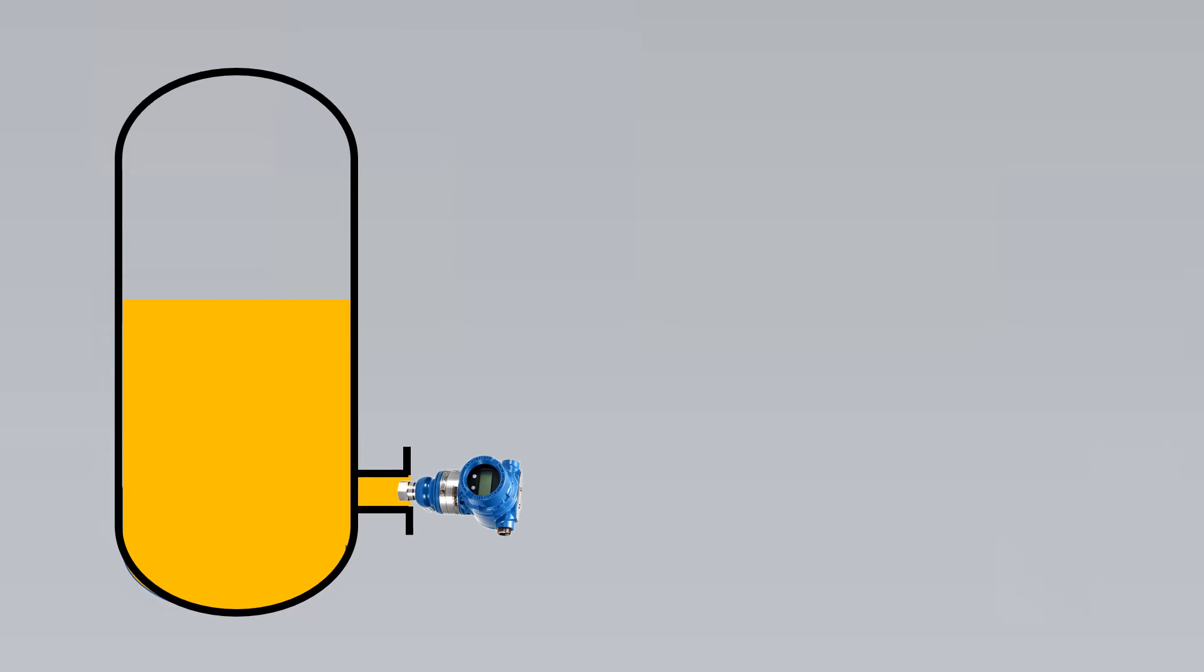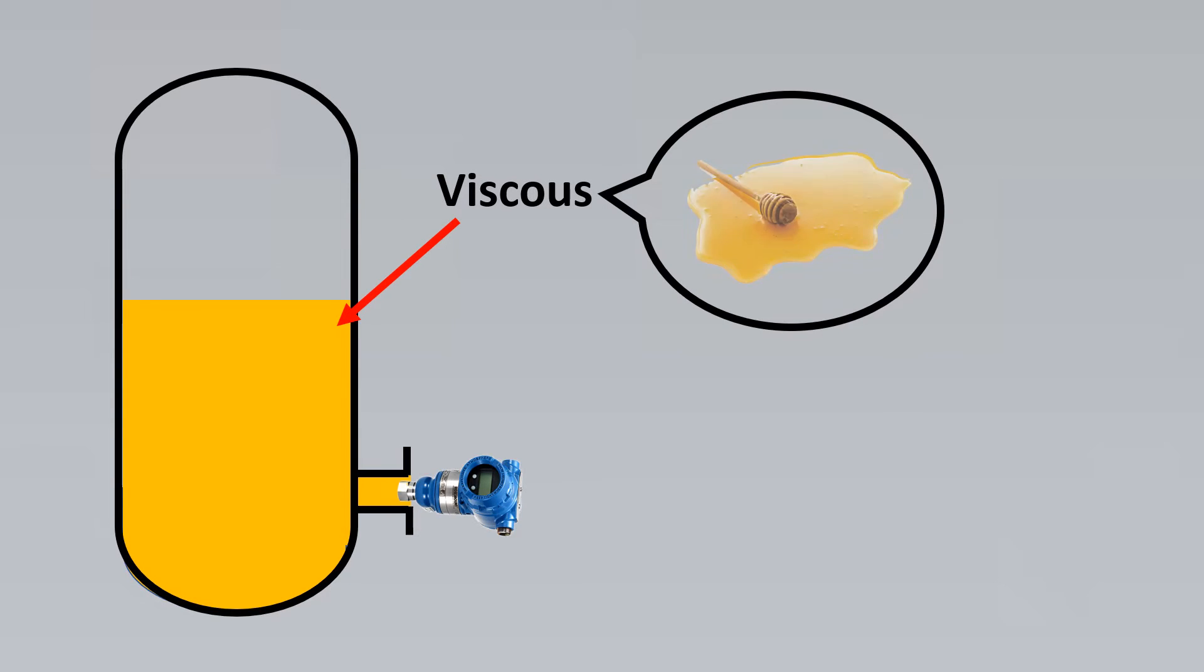Here we had to measure the pressure. So we used a traditional pressure transmitter to measure the pressure. But what had happened was the fluid was very viscous. You could imagine something like honey and thus we could not measure with the traditional pressure transmitter and hence we had to go for another option.